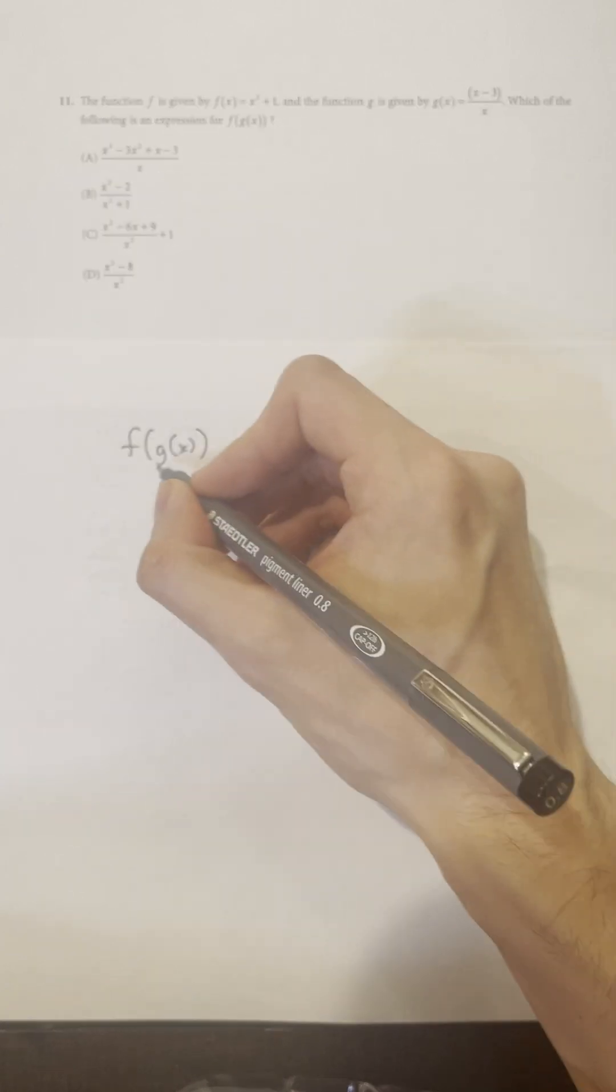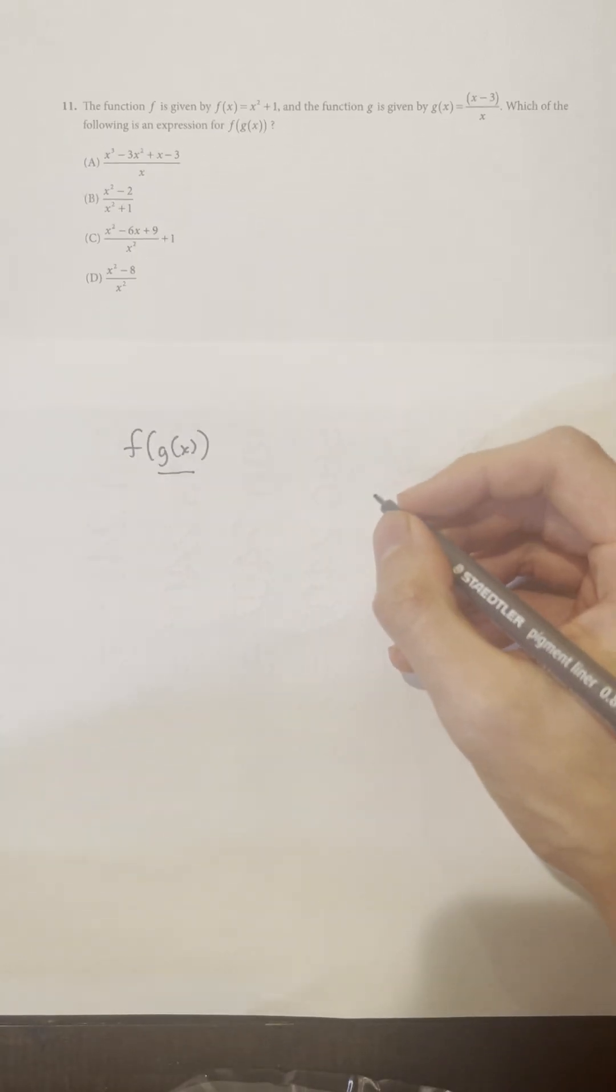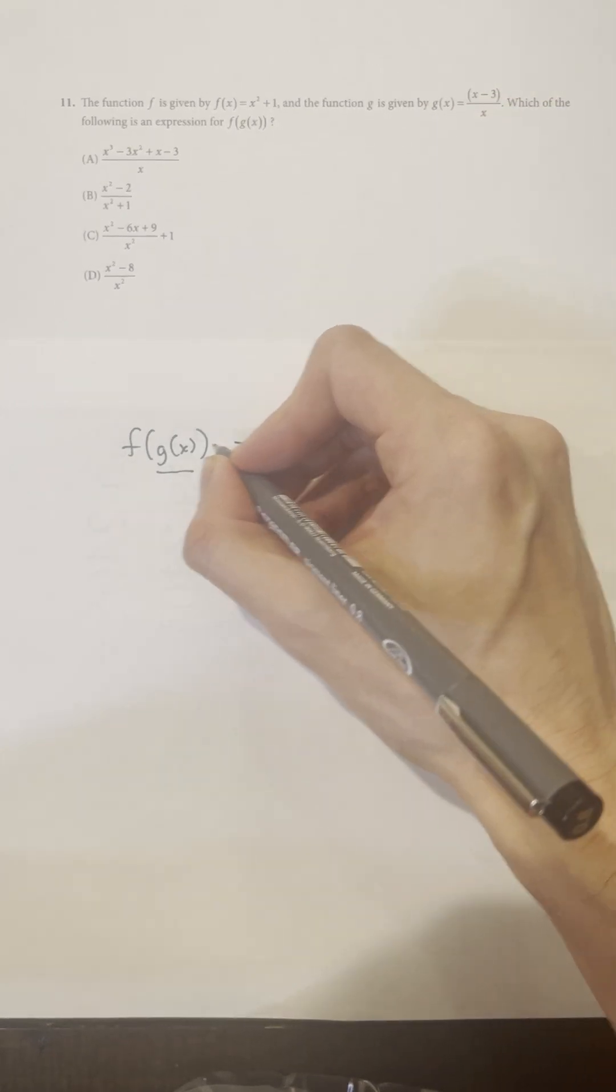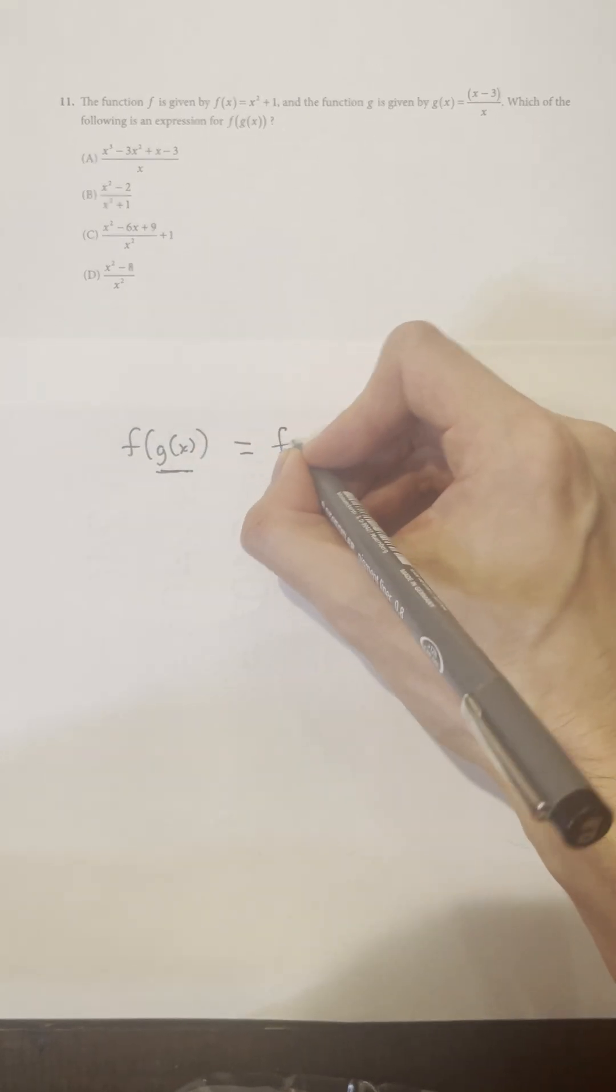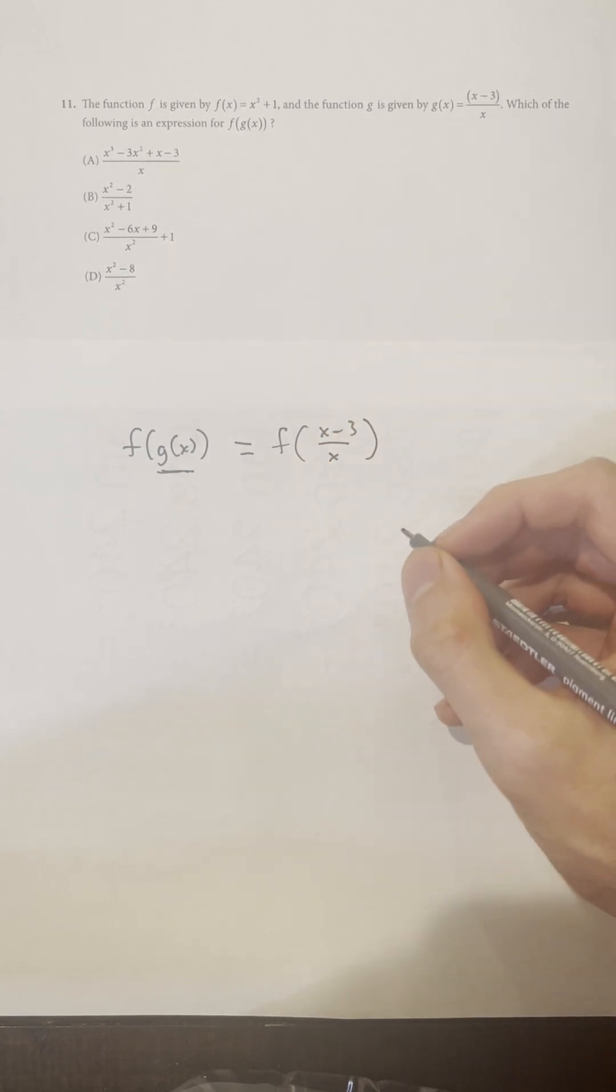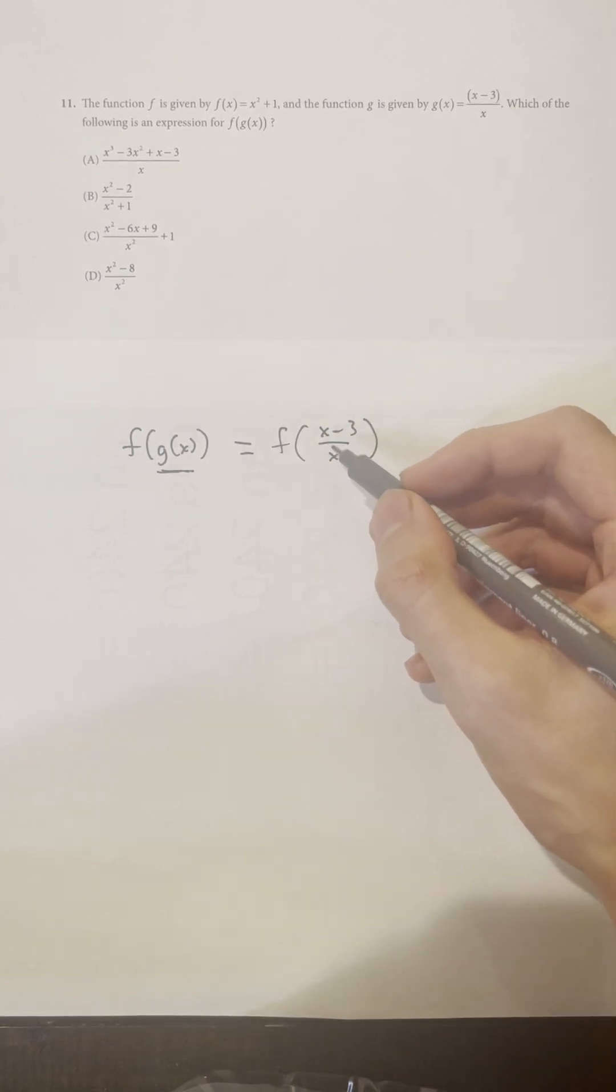What's g of x equal to? So g of x is equal to (x-3)/x. So we can go ahead and change this to (x-3)/x. How do we find f of (x-3)/x?